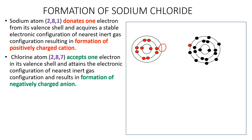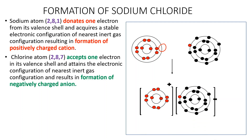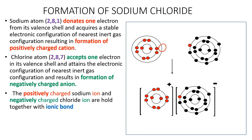Sodium is a metal and chlorine is a nonmetal. This results in formation of a sodium ion which is positively charged and a chloride ion which is negatively charged. The positively charged sodium ion and negatively charged chloride ion are held together by a force of attraction that is referred to as an ionic bond.